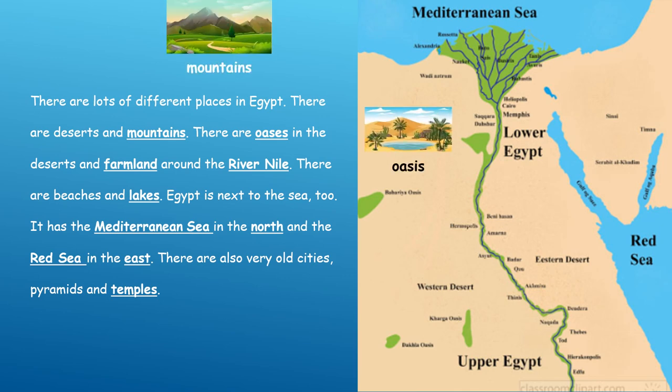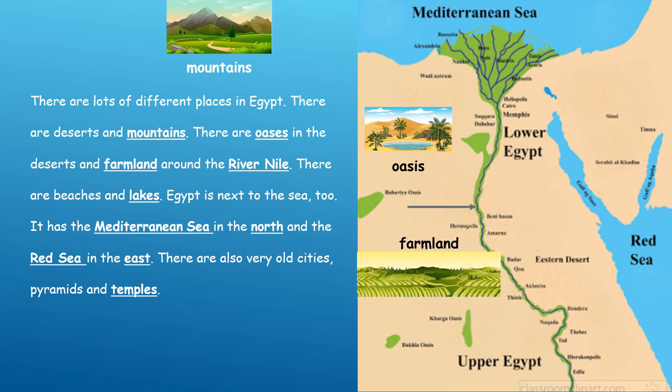An oasis is like this — it will be in the middle of the desert. There are oases in the desert.